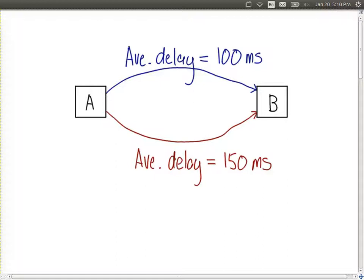And let's say we know the average delay of packets across each path. So across path 1 it's 100 milliseconds and across path 2 it's 150 milliseconds.